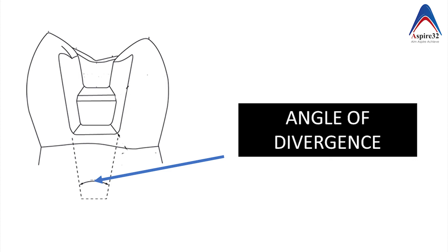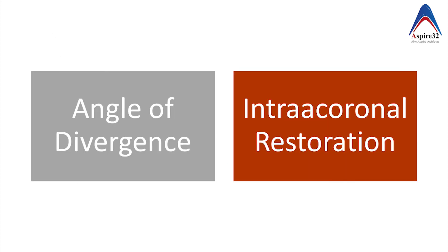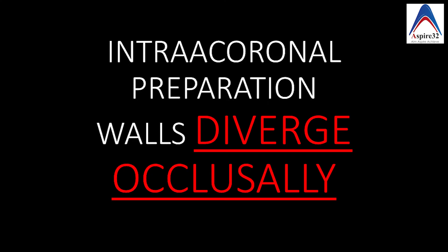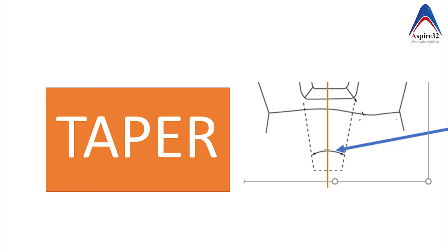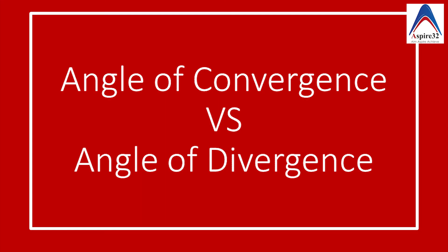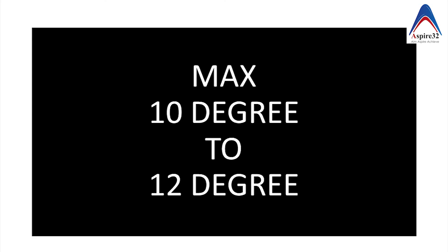If you project these two angles they are going to meet and form a total angle, and that angle is called the angle of divergence because the walls diverge in intracoronal preparations. If you split it in half, you get the taper for each wall. In general, the angle of convergence or divergence will range from 10 to 12 degrees total.